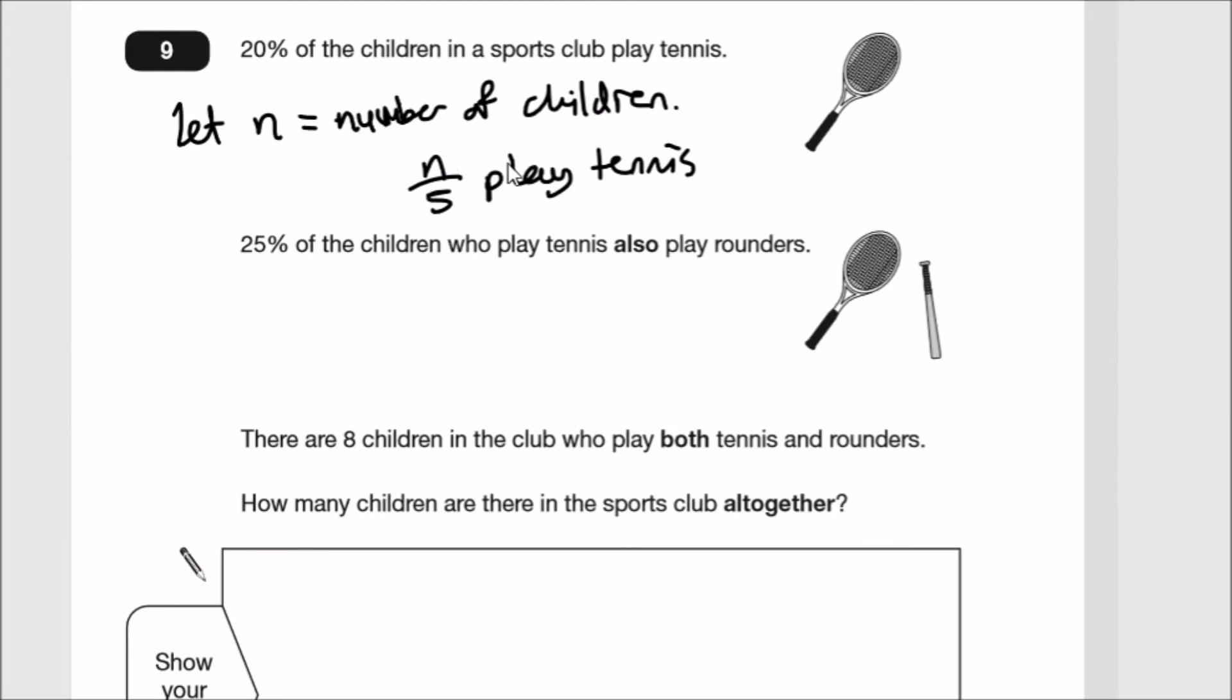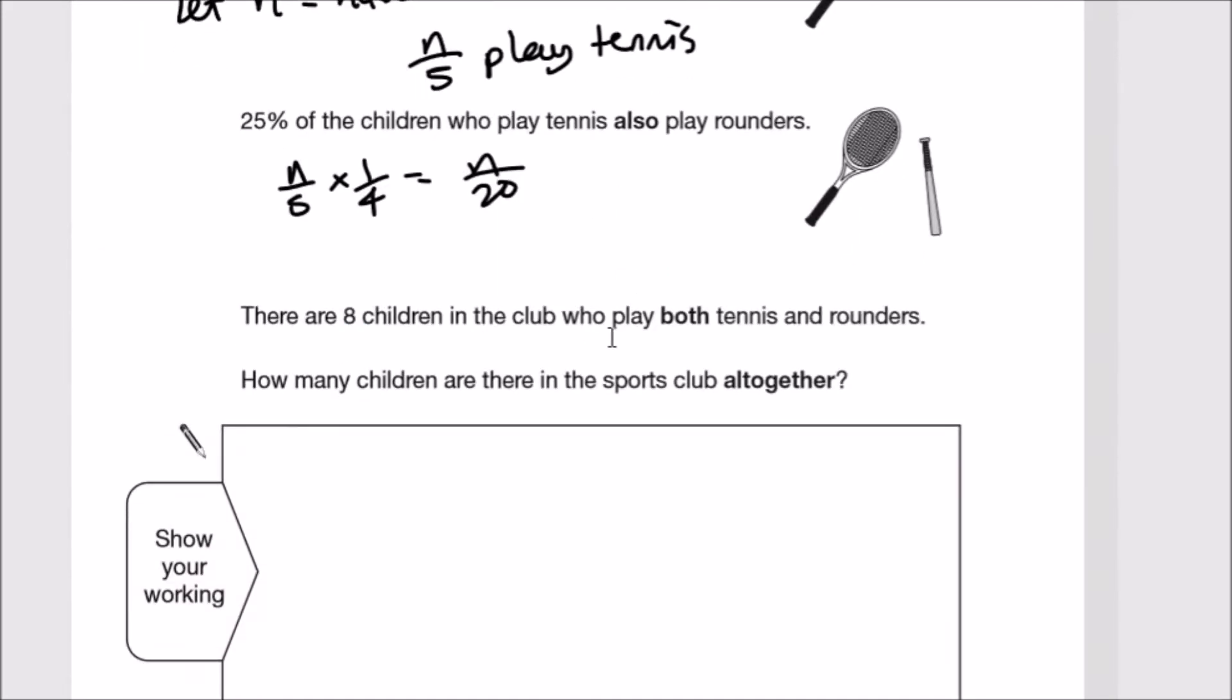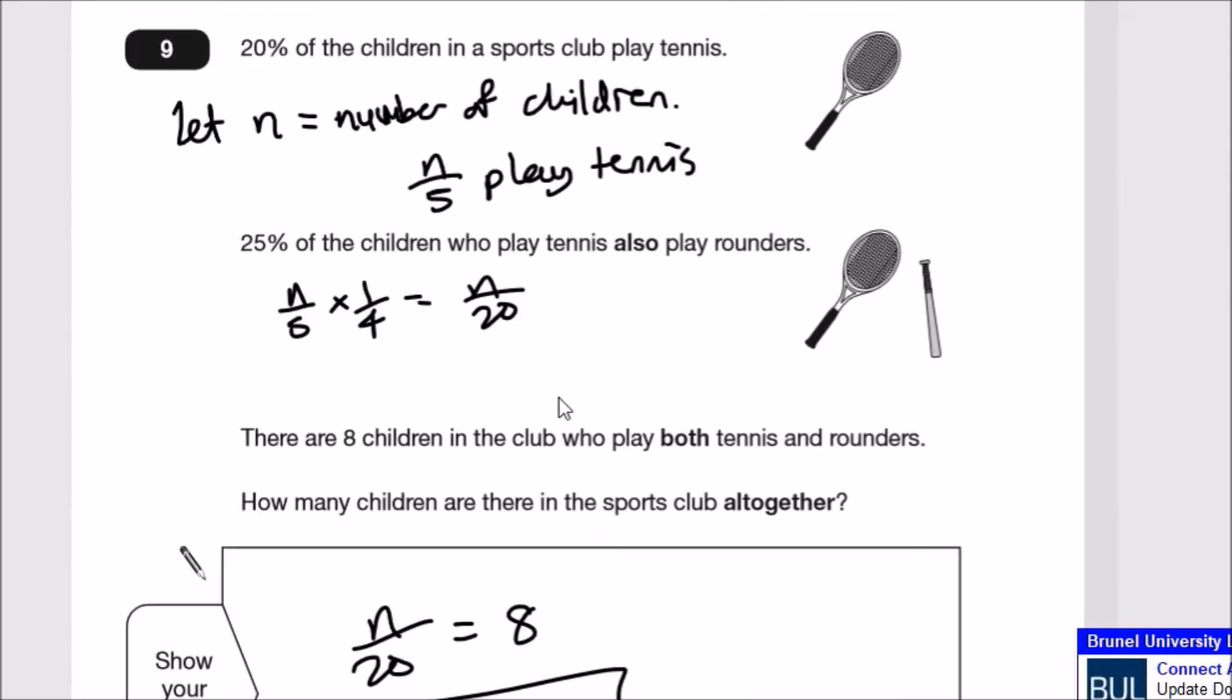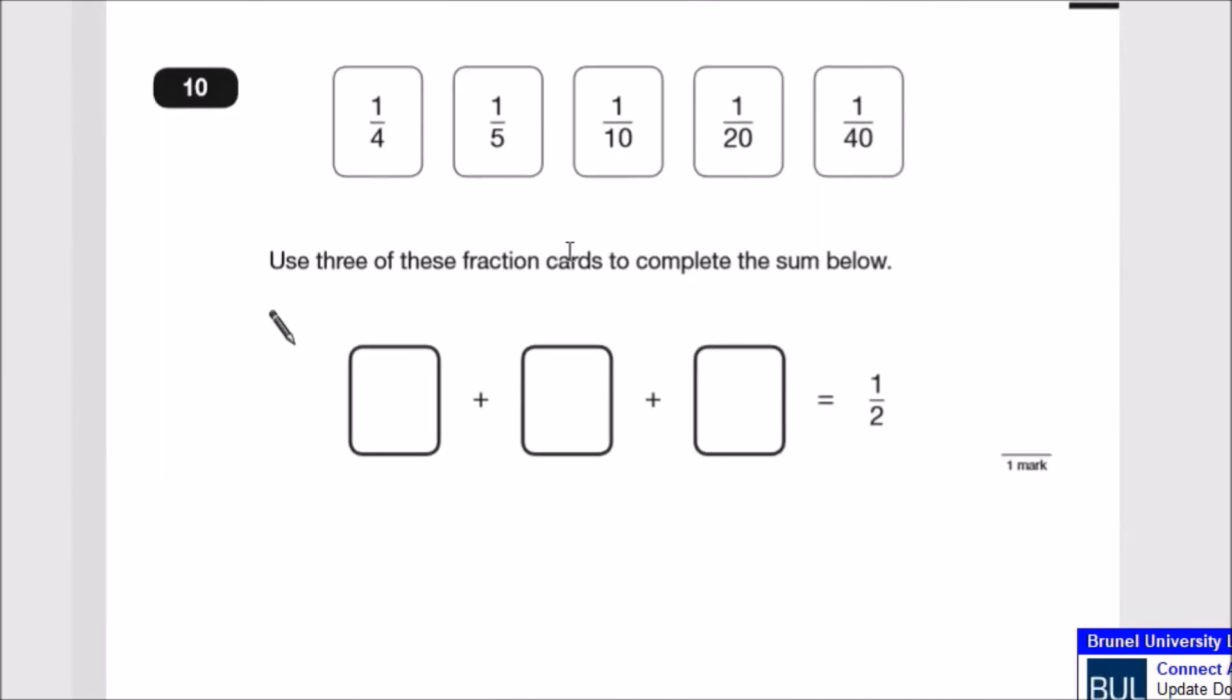25 of these children who play tennis also play rounders. 25 is one quarter, so one quarter of n over 5 is like multiplying, so n over 20 also play rounders. According to the statement, eight children play both, so n over 20 equals 8. Multiplying 20 on both sides gives 160. So this is the number of children. Always use algebra to figure this out, making equations from the statements.